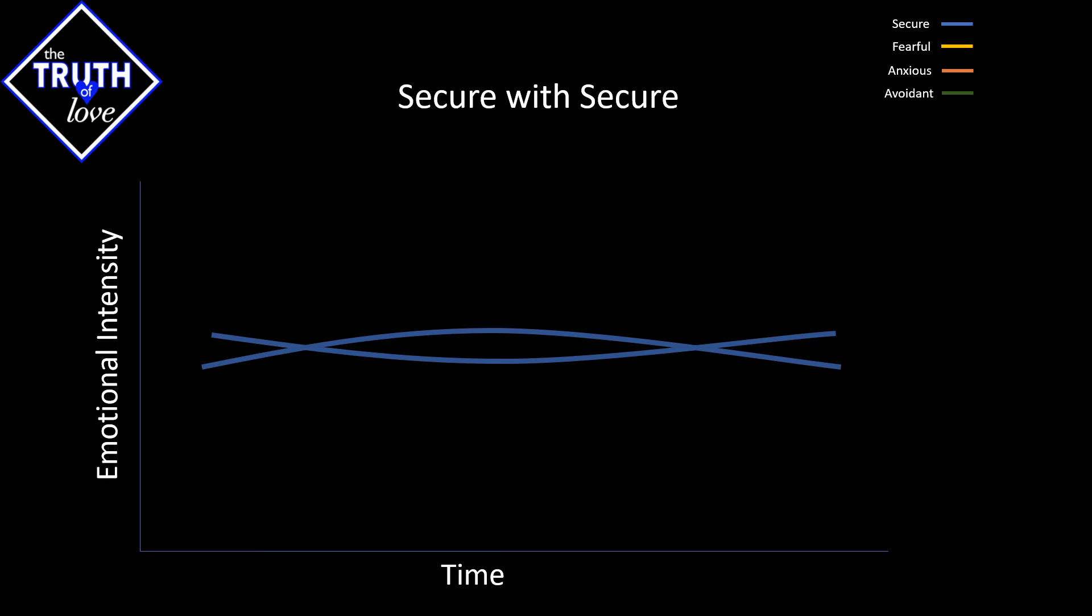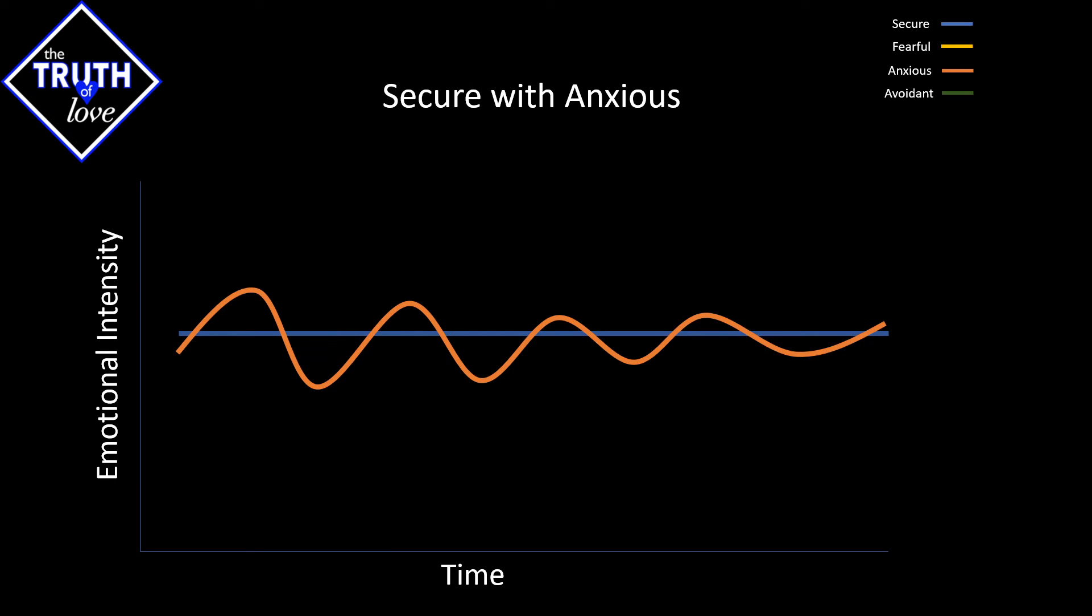But what happens when we introduce another attachment style to the secure mindset? Well, something very interesting happens. If we happen to take someone who's anxious, for example, and happen to put them with a secure, what you'll actually notice is that over time, the emotional waves become less and less intense.